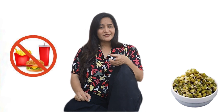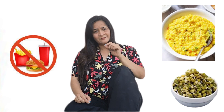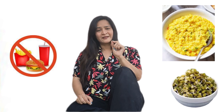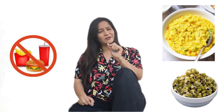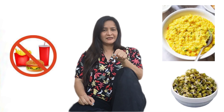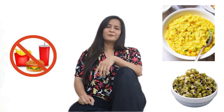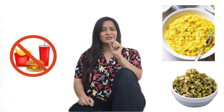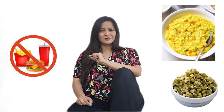You can also have khichdi made with rice and moong dal — that is whole green gram. You can use the whole green gram or the split green gram with the skin. When making khichdi, you can add some spices to it for easy digestion and for Agni Deepana.